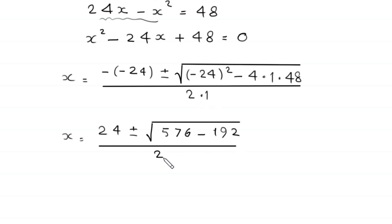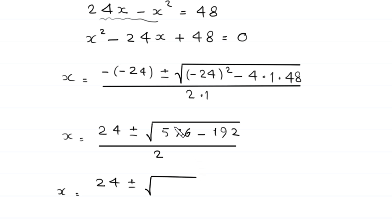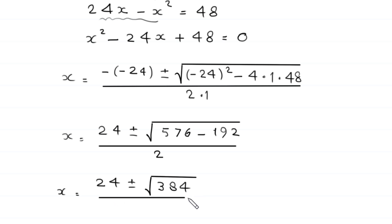Simplifying inside the square root: 576 minus 192 equals 384. So x equals 24 plus or minus the square root of 384, divided by 2.